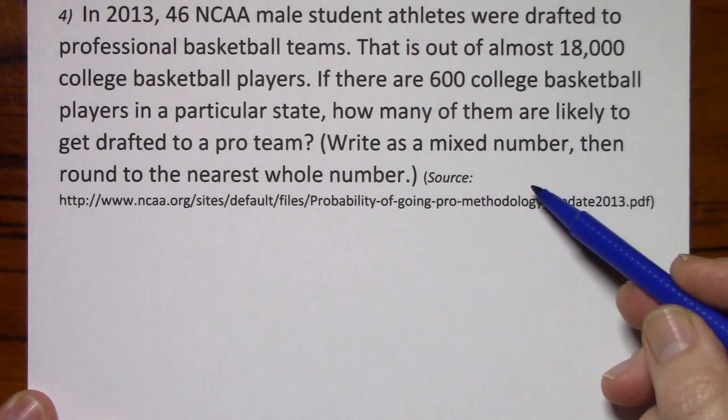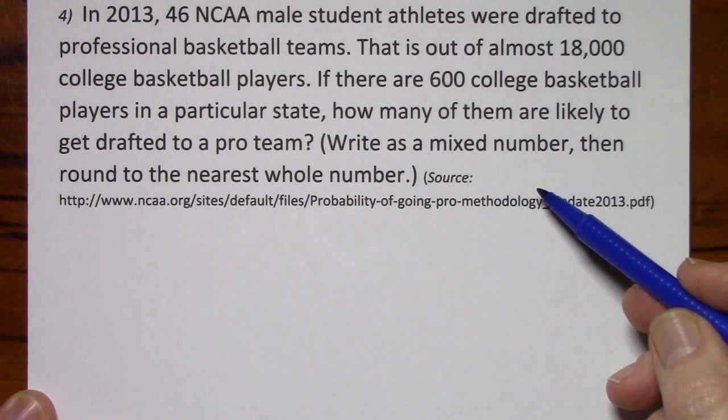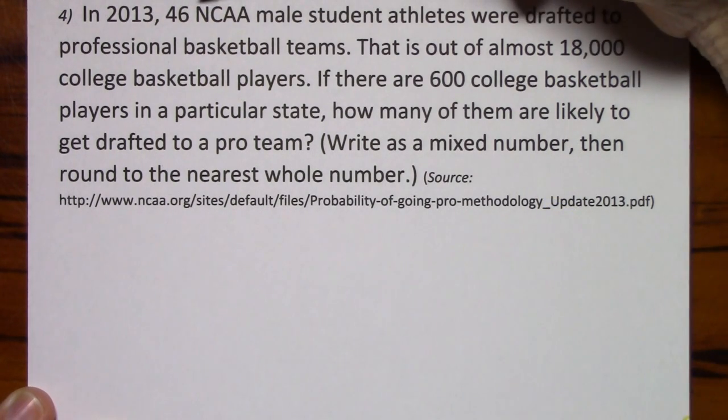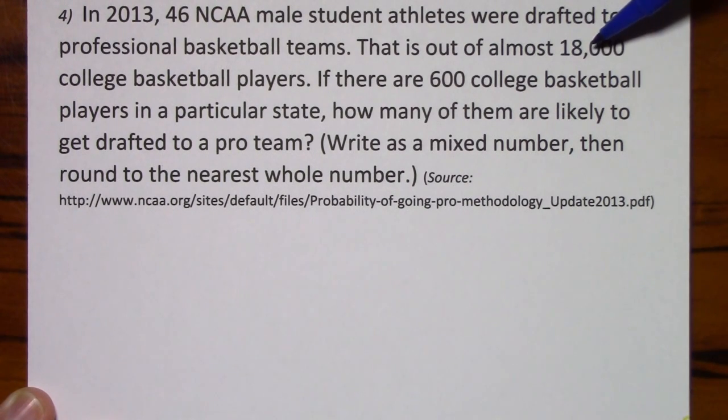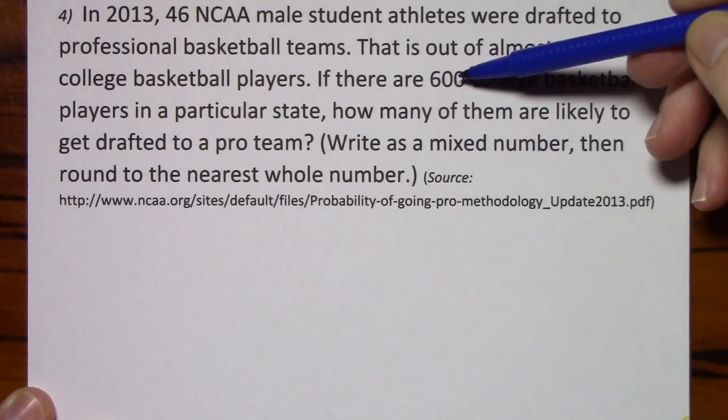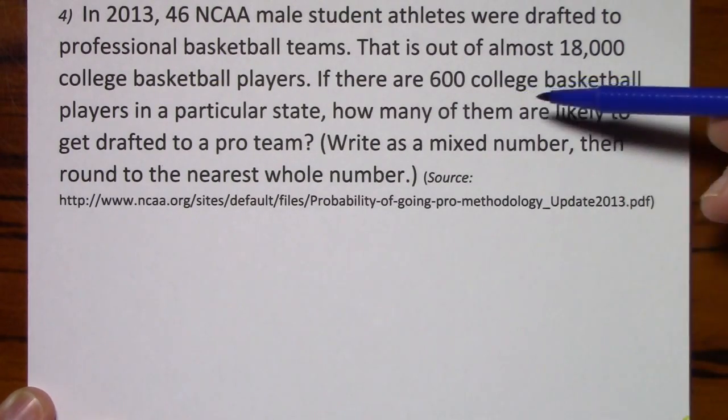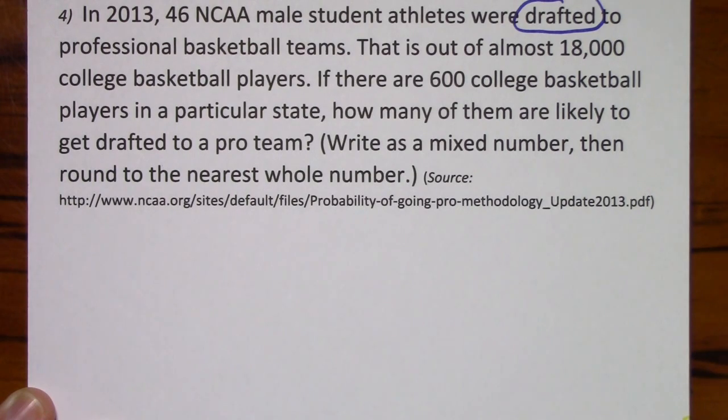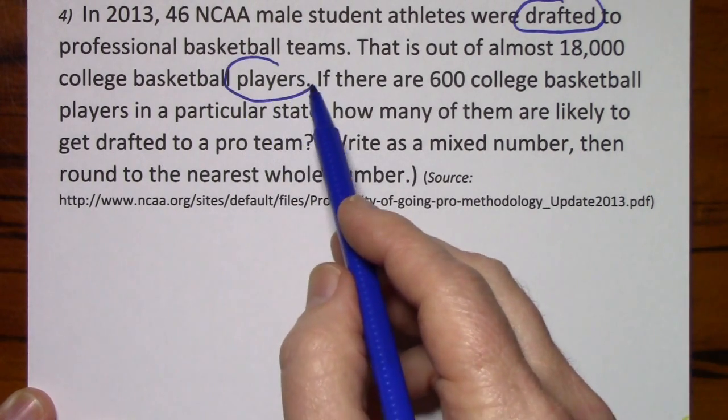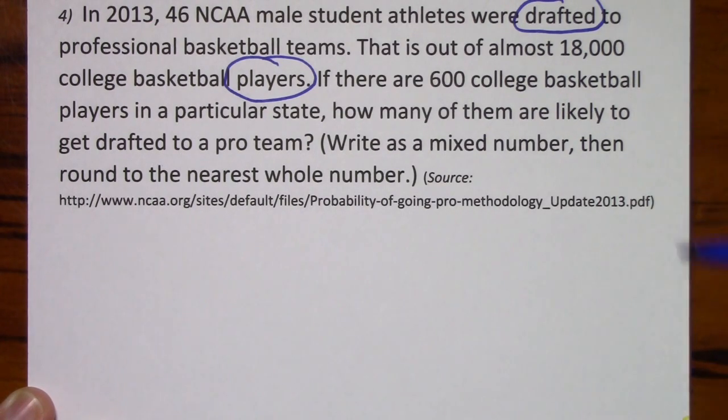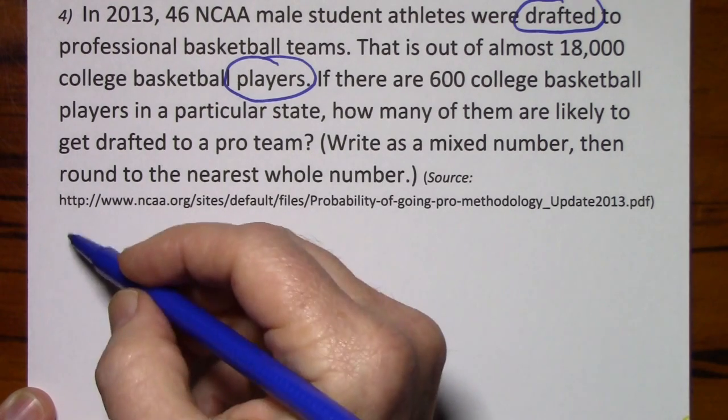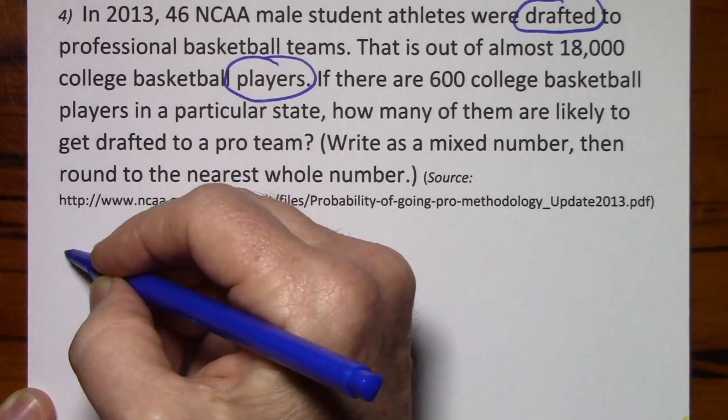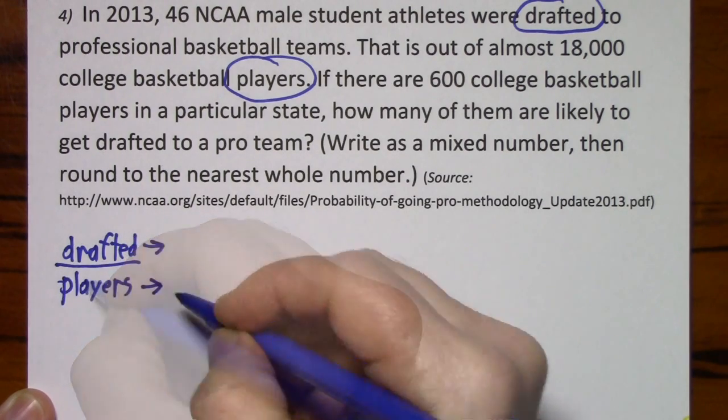I'll give you a minute to read this. So we have 46 were drafted out of 18,000 players. So 600 players, how many drafted. So the categories are drafted and players. You might identify them some other way, but basically you just need your two categories so you can set up your proportion. And again I just take them in the order they're given. We have drafted over players, and now stick with it.